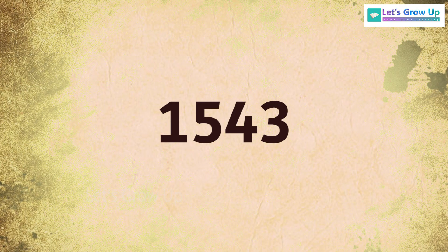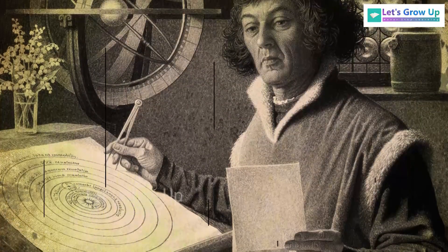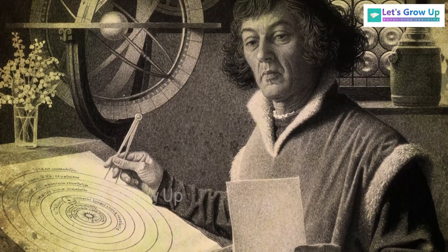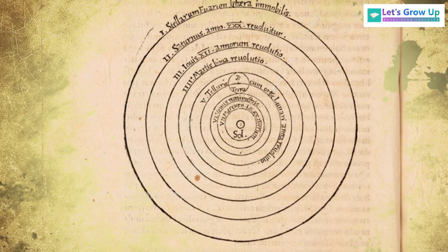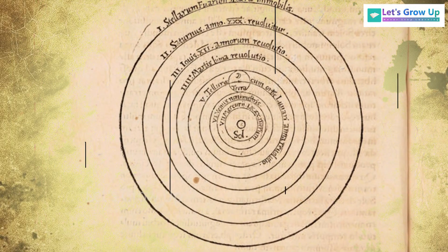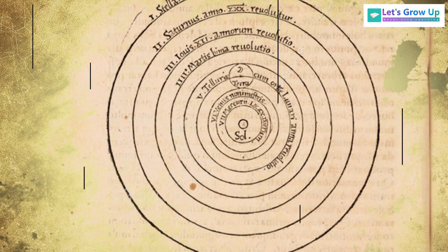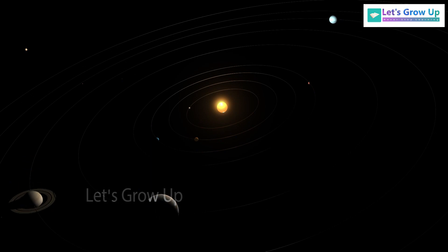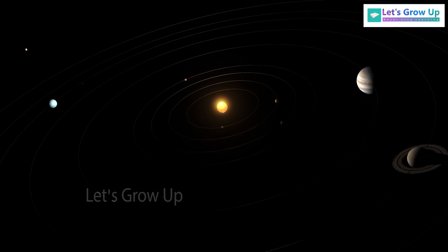In 1543, Nicolaus Copernicus detailed his radical theory of the universe, in which the earth, along with the other planets, rotated around the sun. Just think — this theory took more than a century to become widely accepted.